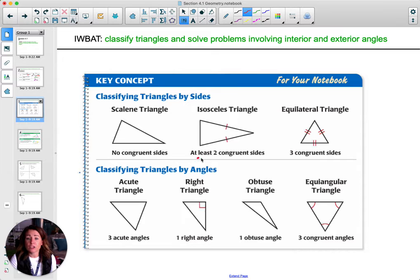If it has at least two sides that are congruent, you remember that the tick marks mean that the sides are equal in length. This is considered isosceles.